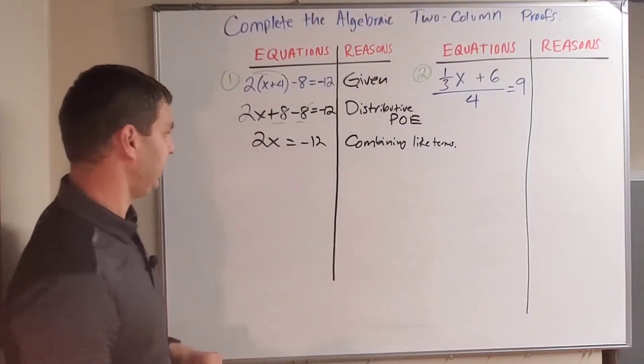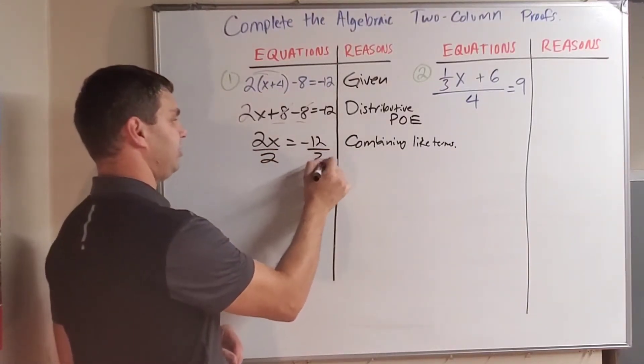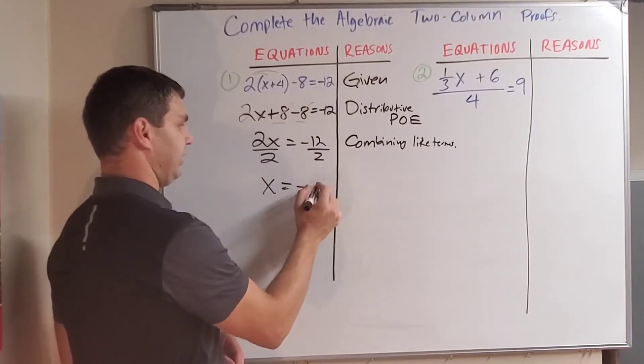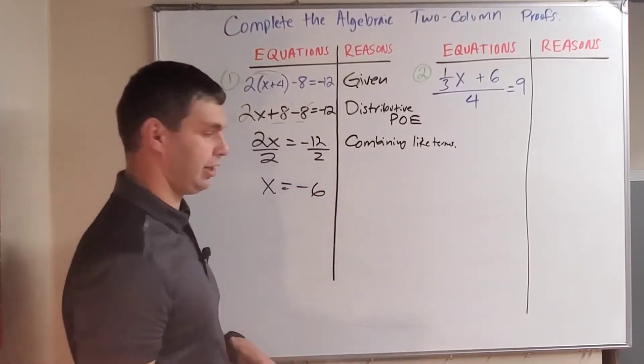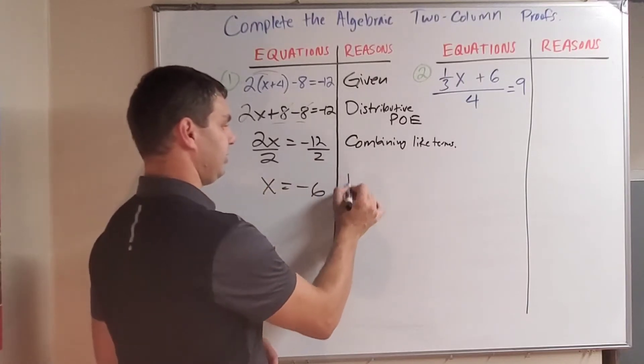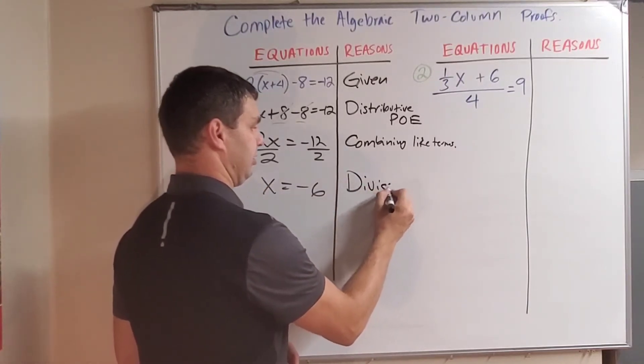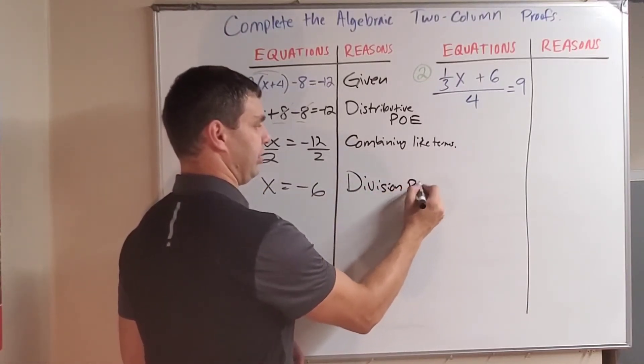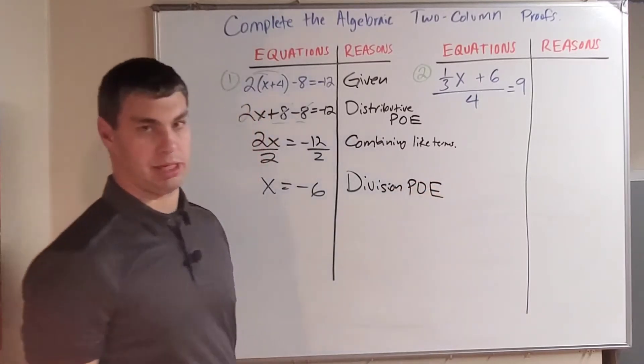What do I have next? Now 2x = -12. I have to divide both sides by 2 to get x by itself and now x = -6. I did that by dividing. So this is the division property of equality or PoE, property of equality.